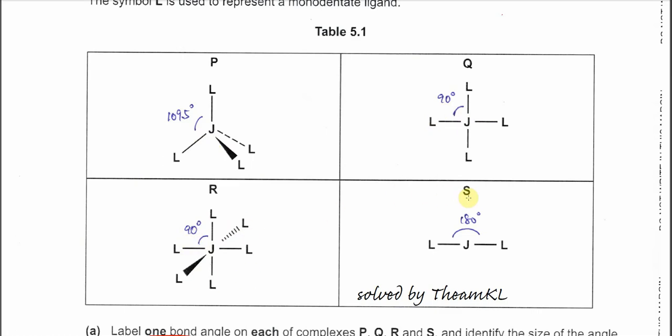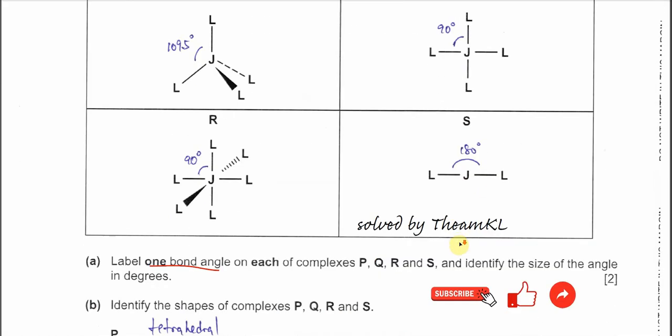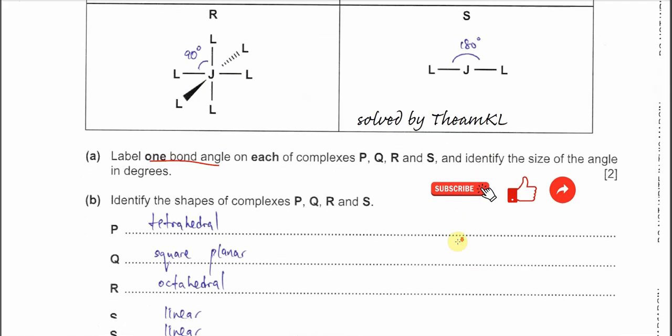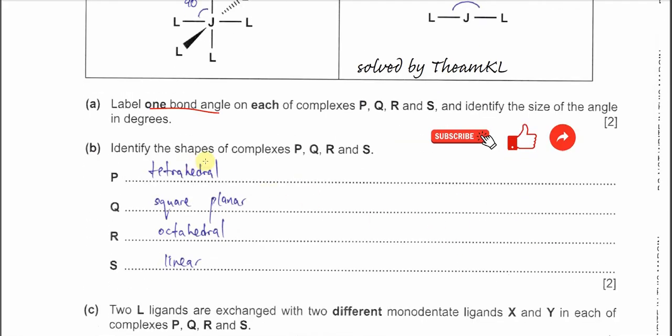For complex S, it's 180 degrees. So identify the shapes for this complex P, Q, R, S. P is tetrahedral, Q is square planar, R is octahedral, S is linear.